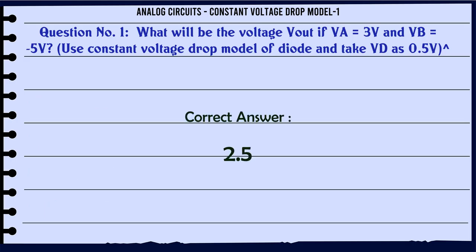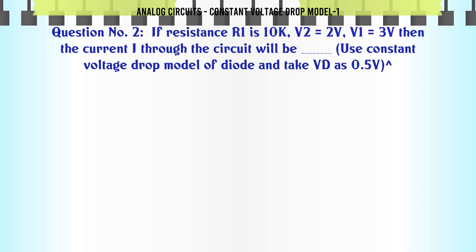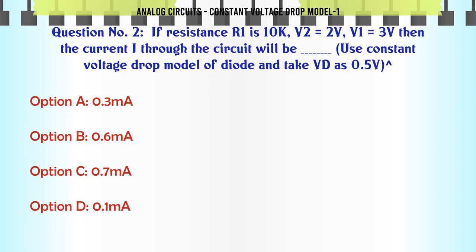The correct answer is 2.5. Next question: If resistance R1 is 10k, V2 = 2V, V1 = 3V, then the current I through the circuit will be — use constant voltage drop model of diode and take Vd as 0.5V. Options: A) 0.3mA, B) 0.6mA, C) 0.7mA, D) 0.1mA.